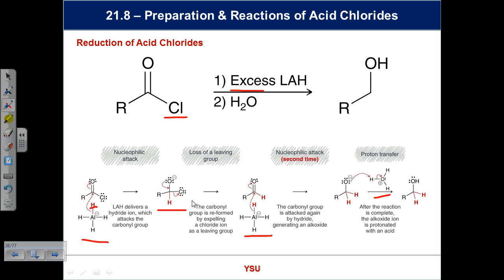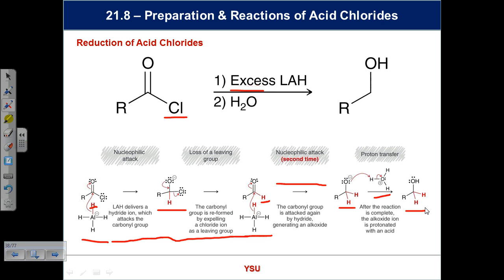With no leaving group remaining after the aldehyde forms, we can't replace it — so a second hydrogen is added. You get a primary alcohol, just like with esters. The last step is a protonation/quench to neutralize the system and give the primary alcohol. For study sheets: acid chloride, just like an ester, gives a primary alcohol via the same mechanism.